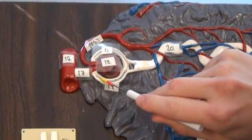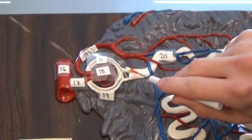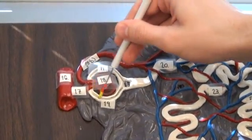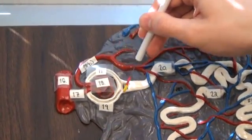19 denotes this and this. It is the capsule of the glomerulus, the glomerular capsule, this white layer, 19.